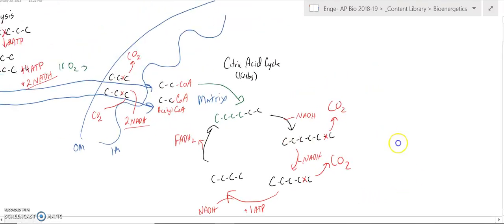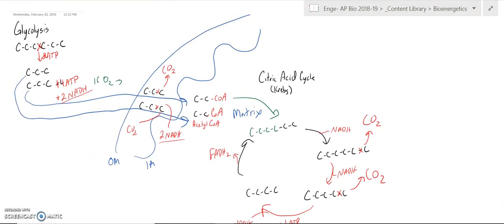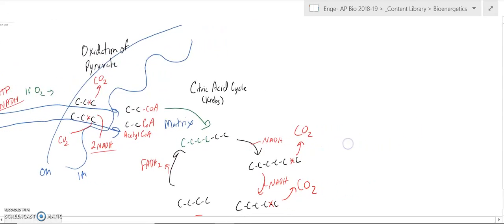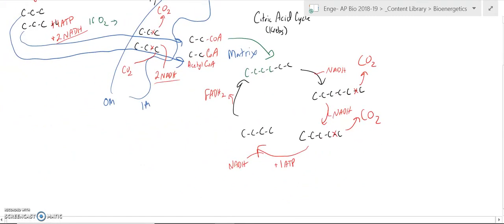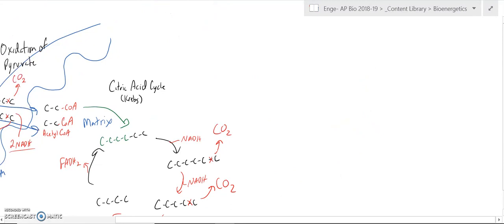So what we've done in these first three steps—glycolysis, the oxidation of pyruvate, and the citric acid cycle—was simply to harness all of our electrons out of the sugar. And so ultimately, I now have plus 10 NADH, plus 2 FADH2, and plus 4 ATP.